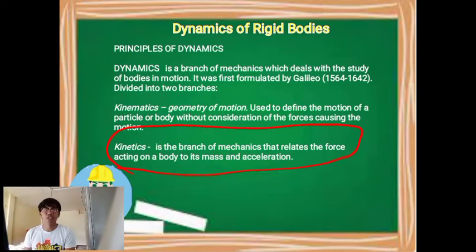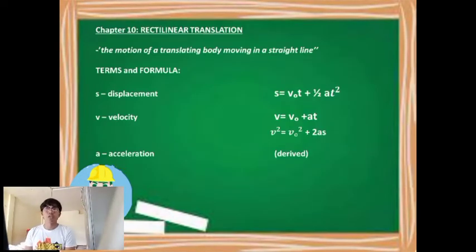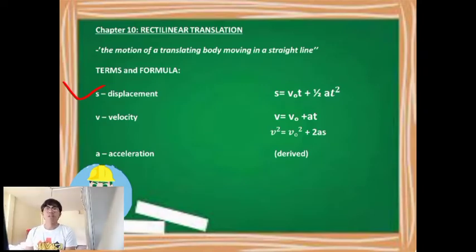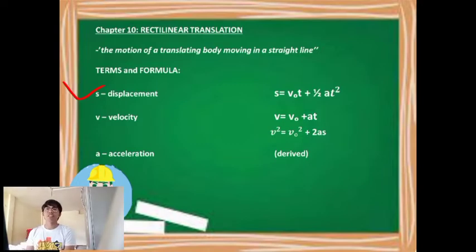In this video we will first discuss rectilinear translation, which means the motion of a translating body moving in a straight line. To summarize: S stands for displacement, with formula S equals initial velocity times time plus one-half times acceleration times time squared. V stands for velocity; final velocity equals initial velocity plus acceleration times time, and also the squared of final velocity equals squared of initial velocity plus two times acceleration times displacement S. To find acceleration, you can derive it from the displacement or velocity formulas.